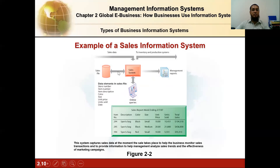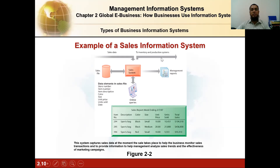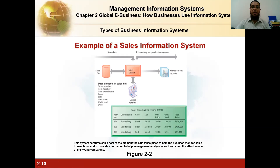A sales system handles online queries answered from the sales file. For example, if you want to buy an AC inverter from Ace, you check their website for prices. Sales data also shows how many units were sold per region and time period, which feeds into inventory and production updates. A sample weekly sales report might show item number 294 — a black small sports bag — with a unit price of $10, units sold, and total sales figures.